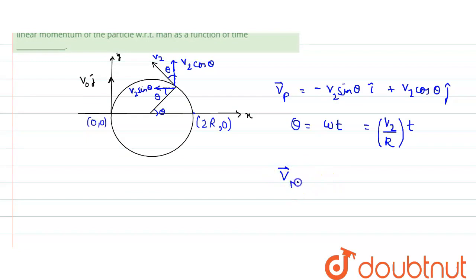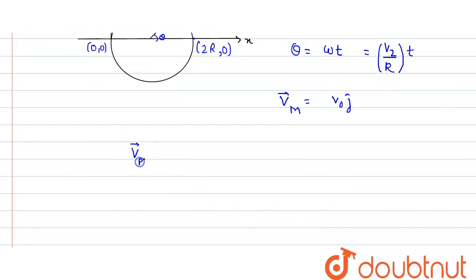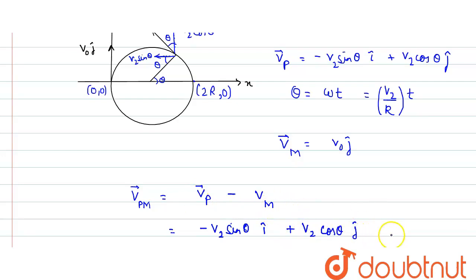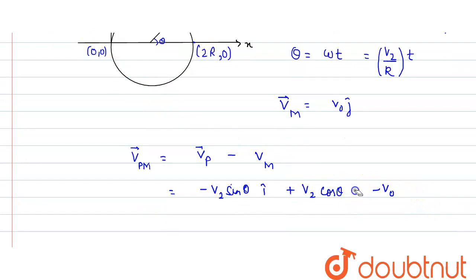The velocity of the man in vector form is v₀ j-cap. To find the relative momentum, we first find the relative velocity: velocity of particle minus velocity of man. This gives minus v2 sinθ i-cap plus (v2 cosθ minus v₀) j-cap.